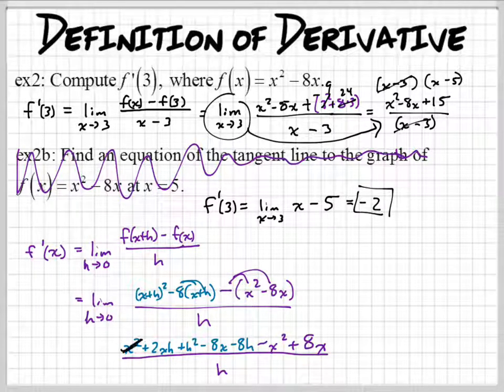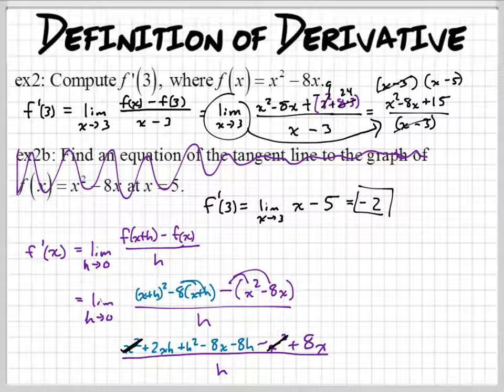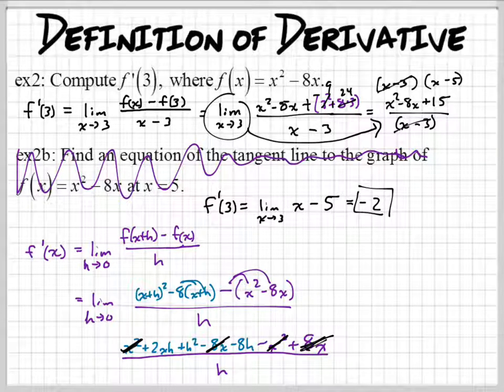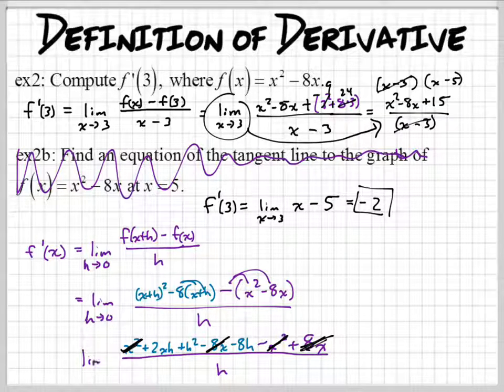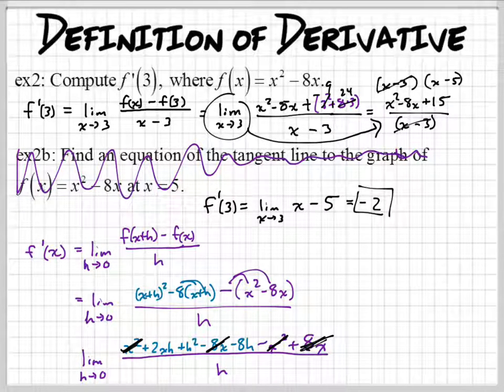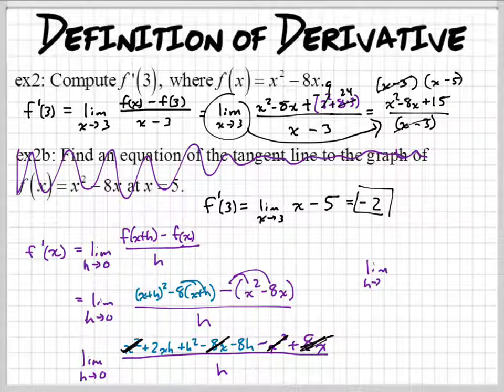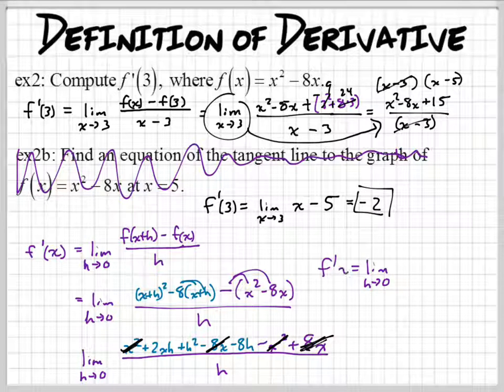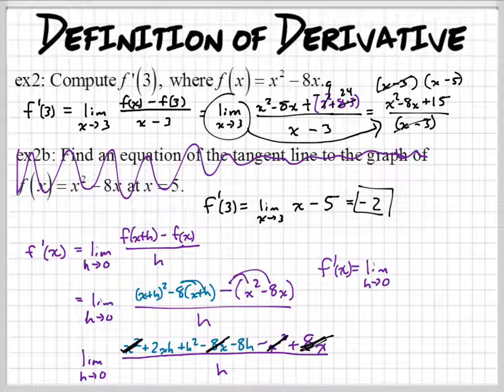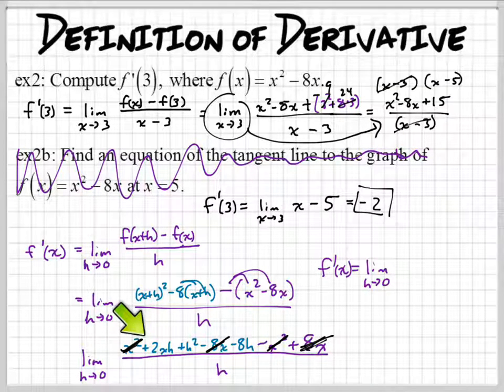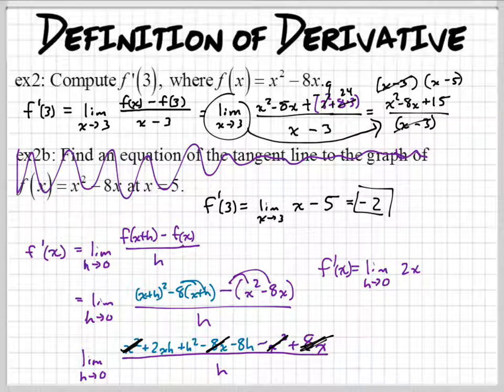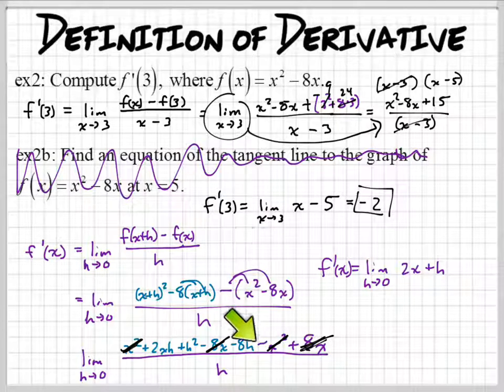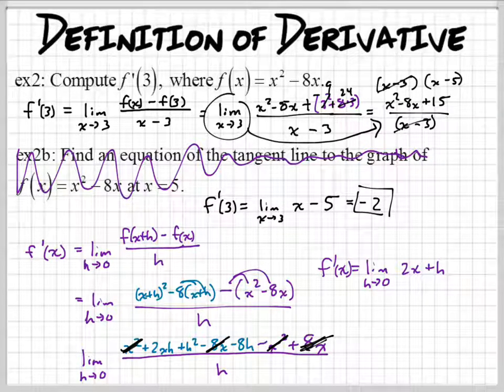Now we're going to get to cancel stuff out. That x squared is gone. And then we're going to cross out the negative 8x and the positive 8x, because those are opposites. And then we have these guys left, just those three terms. So we've got to divide each of those by h and see what we get. We're going to find the limit as h approaches 0, because this is going to be f prime of x. Let's see, what is 2xh divided by h? 2x. What is h squared divided by h? h. And then the last one, which is negative 8h divided by h? Minus 8.